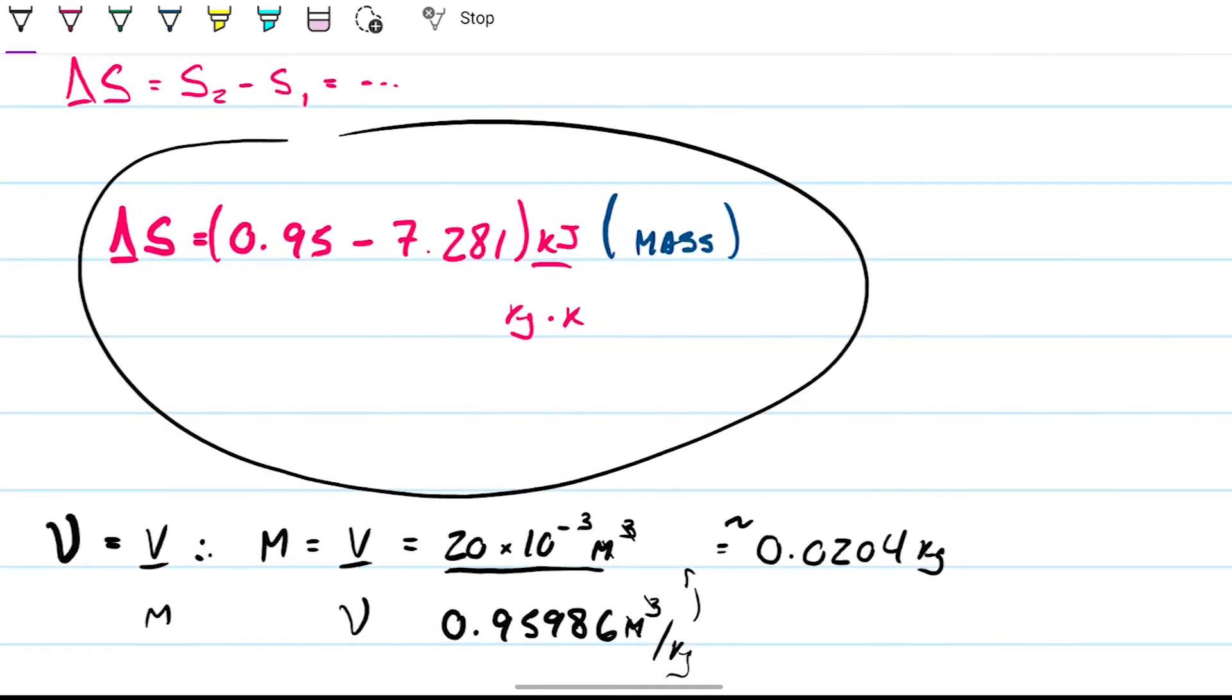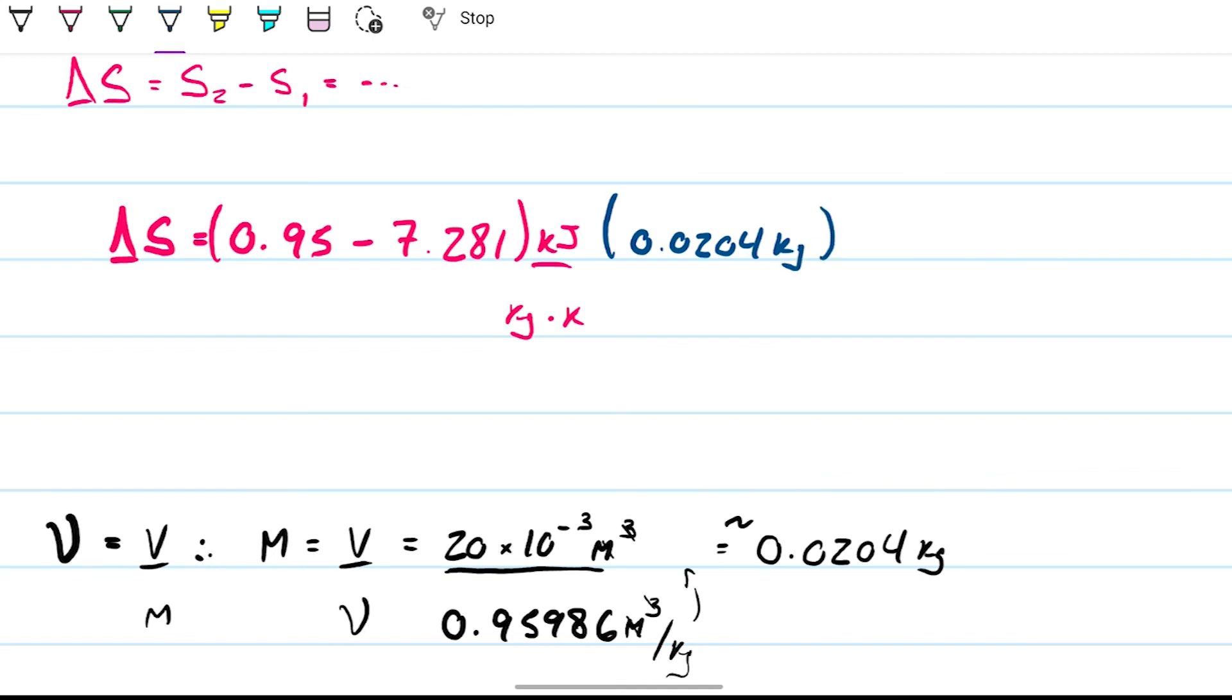So now, obviously the number here would be 0.6 something, but then we're going to multiply by a very small number on the mass. So let's go ahead and remove this and put the mass, 0.0204 kilograms. And this will be our answer in kilojoules per Kelvin. And this turns out to be about negative 0.13. And obviously, units are kilojoules per Kelvin.